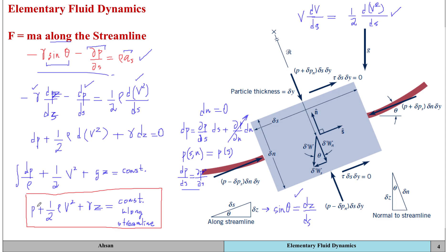This is a really powerful equation, but we have to be careful about the assumptions. We must remember that viscous effects are assumed negligible, the flow is steady and 2D, the flow is incompressible, and this equation is only applicable along the streamline. Across or normal to the streamline the equation would be different.